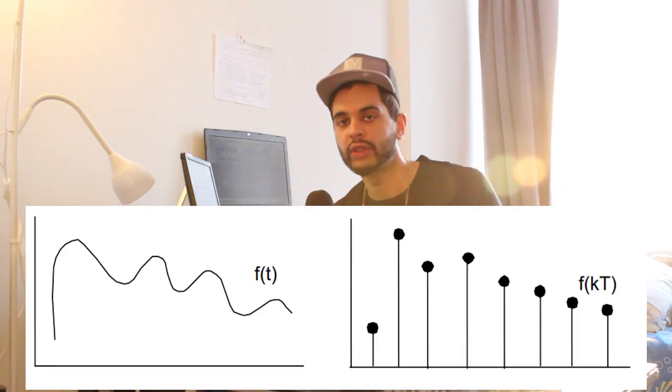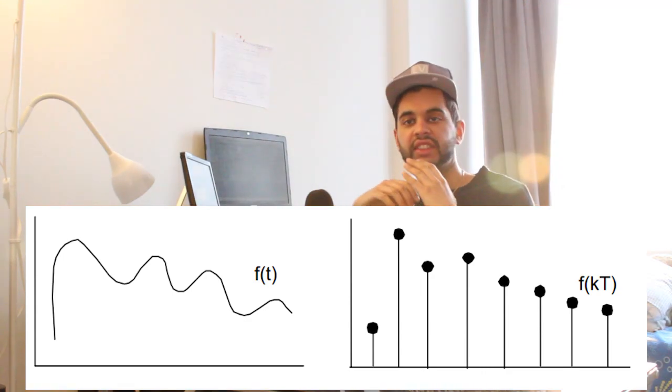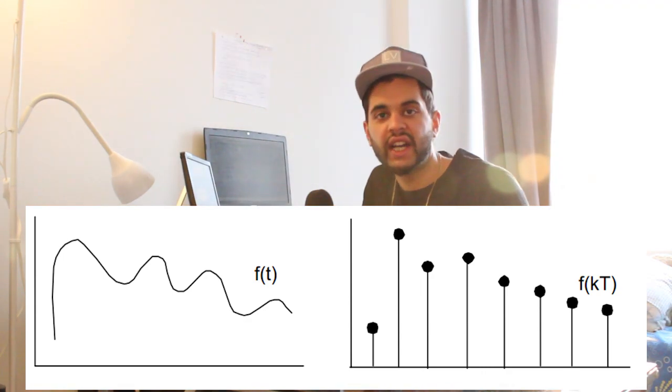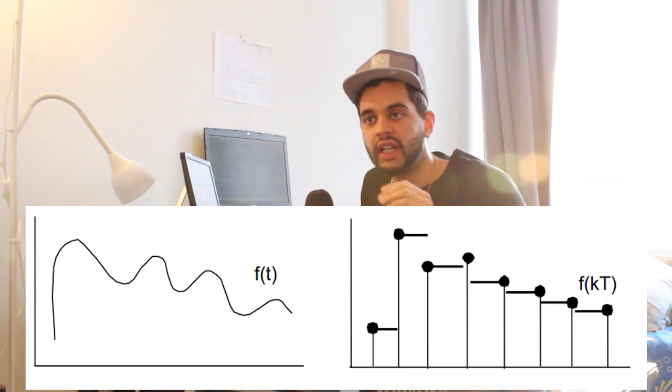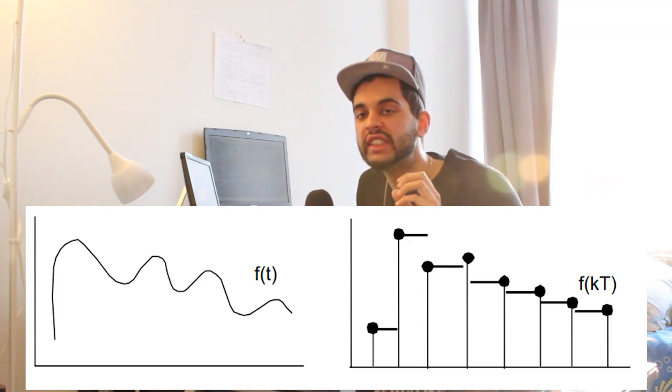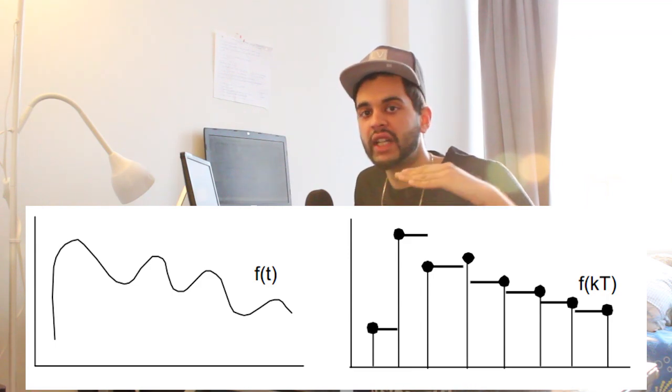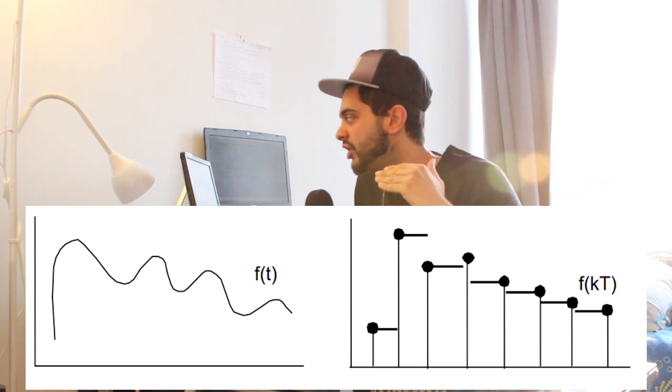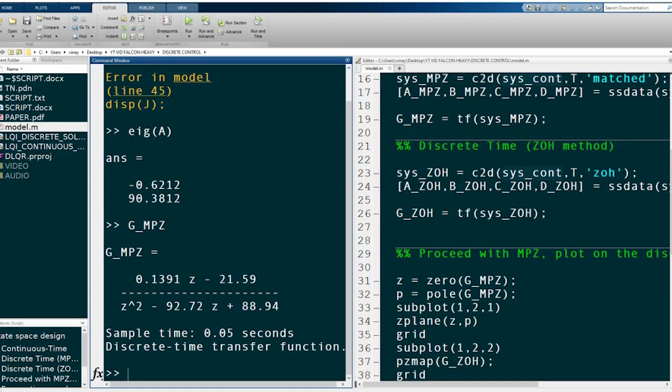For a discrete signal you obtain outputs at each time step — k equals 1, k equals 2, and so on. What the zero-order hold does is essentially add a continuous step between those discrete signals, like doing a step approximation at each time step. The matched pole-zero method simply matches the poles and the zeros — the roots of the numerator and denominator of the transfer function — making them equal in the continuous and discrete domains.